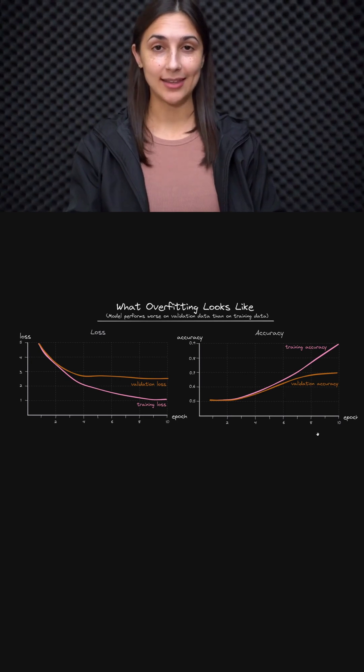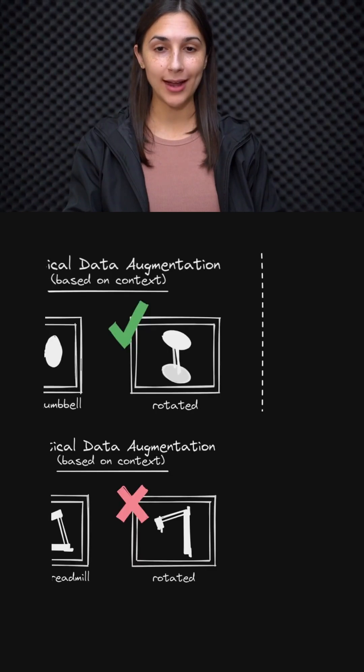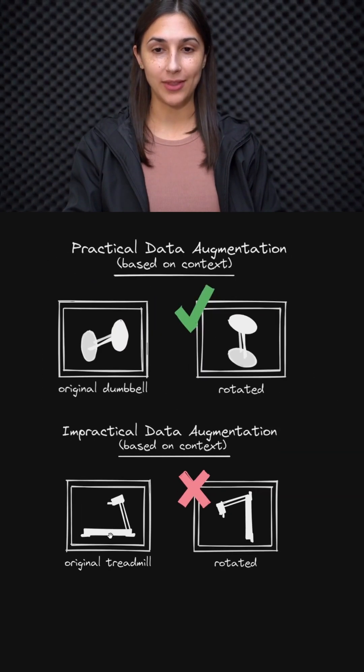One key point about data augmentation techniques is that the modifications that we make to the training data should be reasonable or practical based on the context of the data itself.